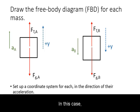In this case, because mass B is greater than mass A, we anticipate the acceleration of mass B to be down and mass A to be up.